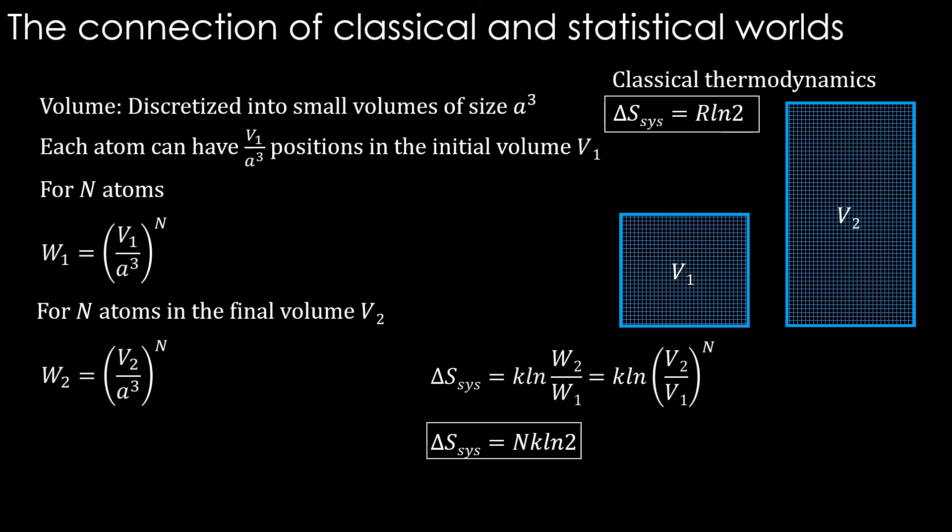The constant R in classical entropy is now equal to N K in the statistical entropy. Therefore the constant K is R divided by N which is the Boltzmann constant. We have seen it in the video on ideal gas.